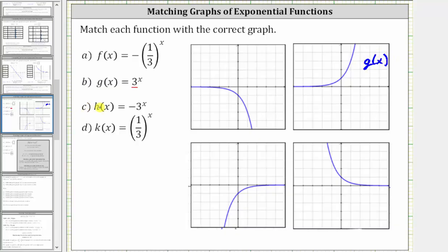Now let's take a look at h of x equals the opposite of three raised to the power of x. Notice how because of this negative sign, all the function values or y values for h of x are going to be less than zero or negative. Because h of x is equal to the opposite of three raised to the power of x, for the same x values, g of x and h of x are going to have the opposite function values or y values.